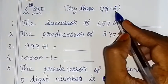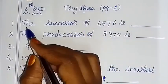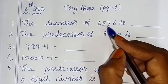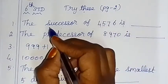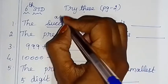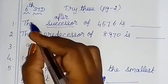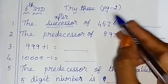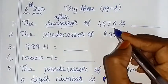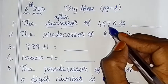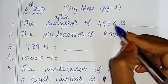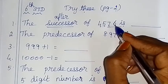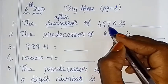Now let's try this on page number 2. The successor of 4576. Successor means the after number. Let's check the last two digits: 76, so the after number is 77. Therefore, the successor of 4576 is 4577.